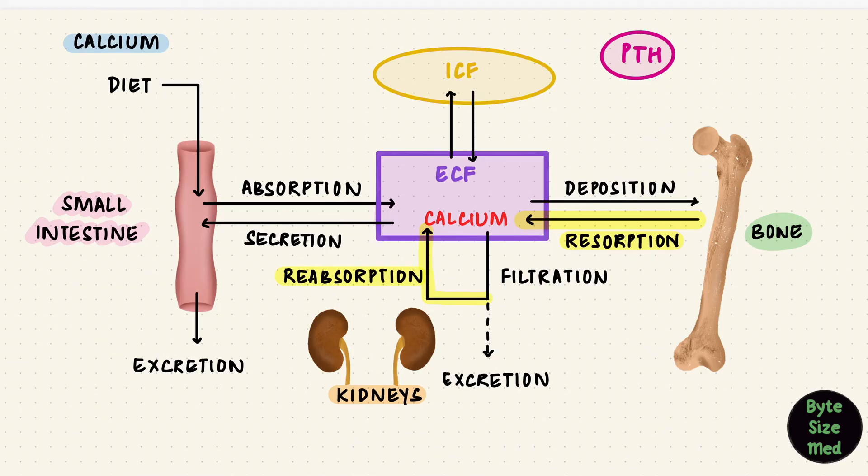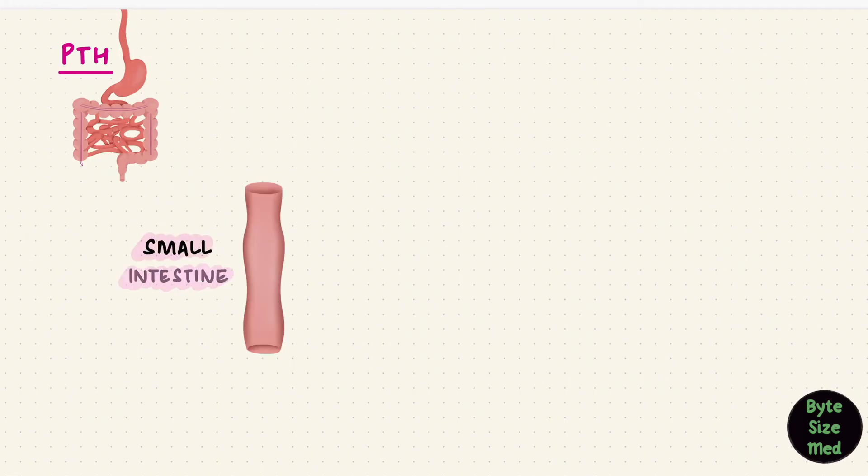That's how PTH directly acts on the kidneys and bones. But in the intestine, if the plasma calcium is low, how can PTH fix that? By increasing calcium absorption. PTH does this yes, but not directly. It does this through vitamin D.